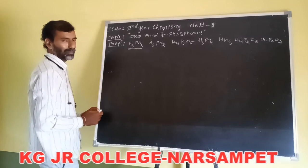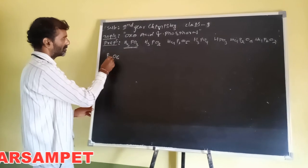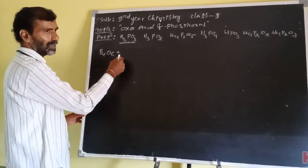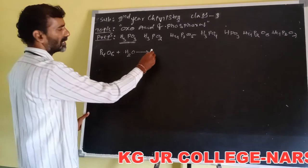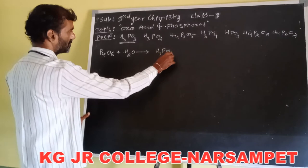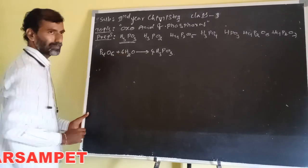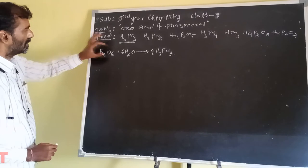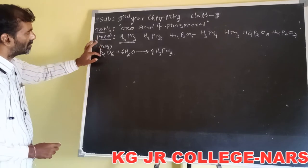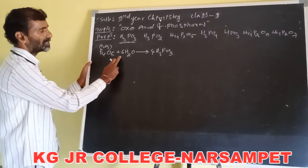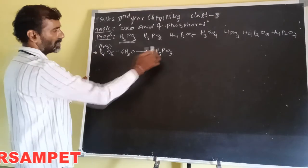H3PO3 is prepared by the hydrolysis of P4O6. Phosphorus trioxide, P2O3, whose dimer is P4O6, undergoes hydrolysis: P4O6 plus 6 moles of water gives 4 moles of H3PO3. This is about the preparation of orthophosphorous acid.